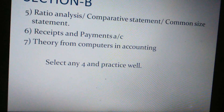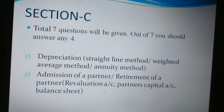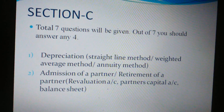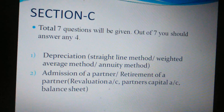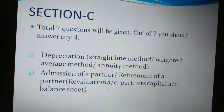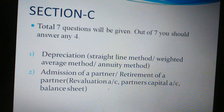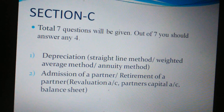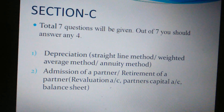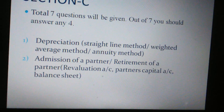Select any four from these seven and practice well. Section C consists of seven questions where you have to answer any four. The first topic is depreciation — there are three methods: straight line method, reducing balance method, and the annuity method. Any one of the three will be given.